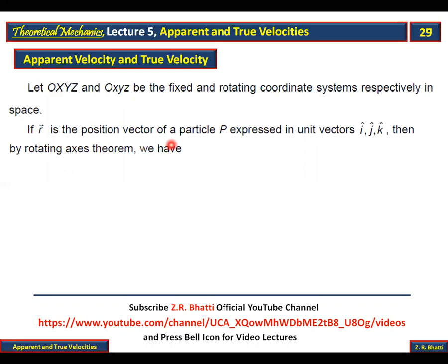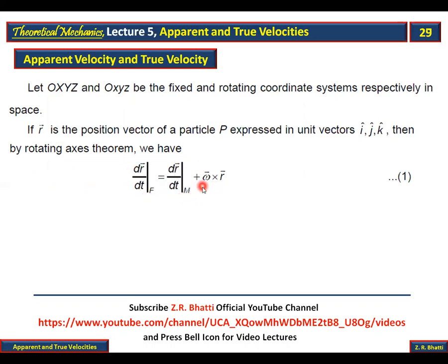If R is the position vector of the particle P expressed in unit vectors I, J, K, then by the rotating axis theorem we have: DR/DTF is equal to DR/DTM plus omega cross R, where omega is the angular velocity of the rotating coordinate system.